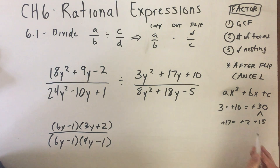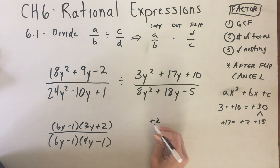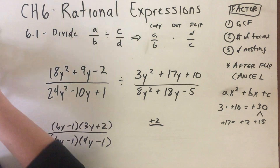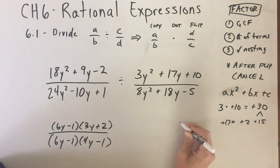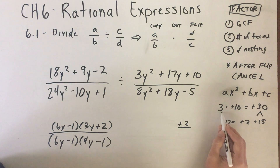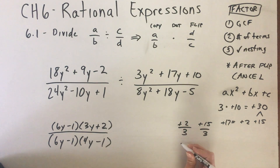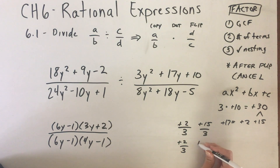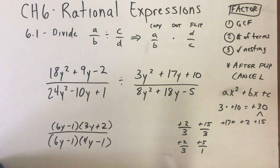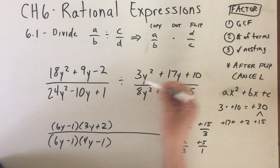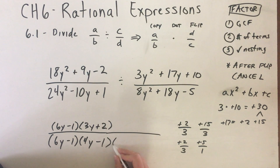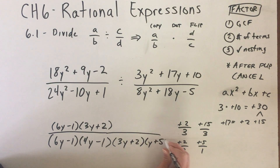Using 2 and 15 — both positive — they sum to positive 17. Those are my factors. I write each over A, which is 3: 2/3 and 15/3. The fraction 2/3 won't reduce, but 15/3 reduces to 5 — dividing 3 out of top and bottom. Writing these as factors, and because this is the divisor and we're flipping, these factors go on the bottom: (3y + 2) and (y + 5).